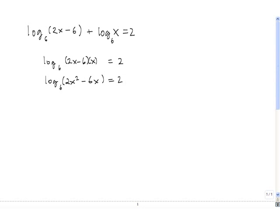The next thing that we want to do is rewrite in exponential form. So if log base 6 of 2x² minus 6x is 2, then by definition 6² is 2x² minus 6x. So we have this 6 raised to this power is equal to this.